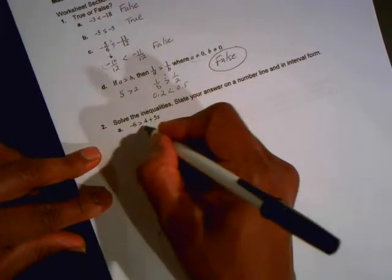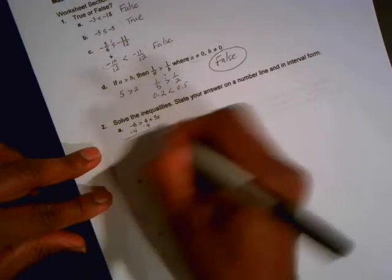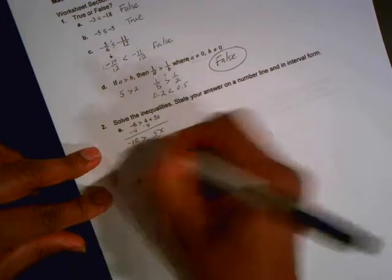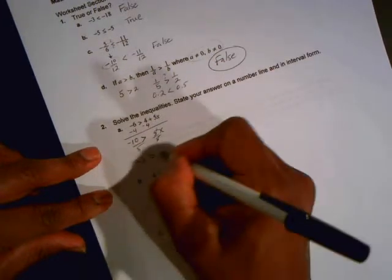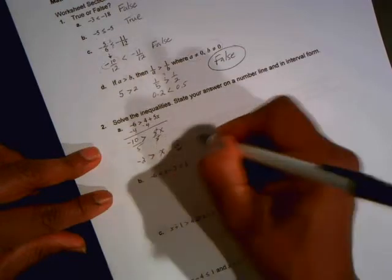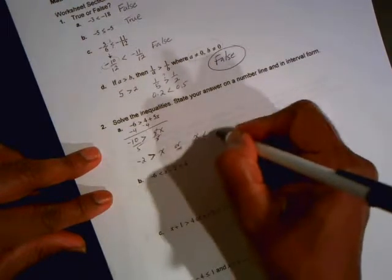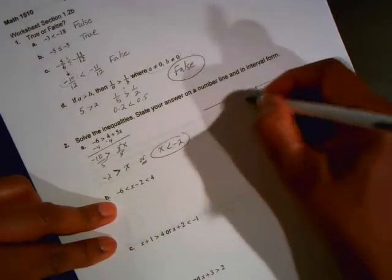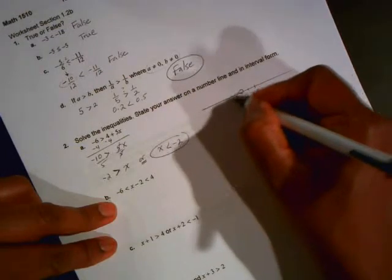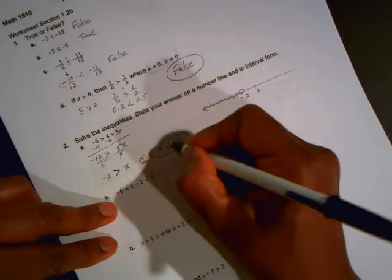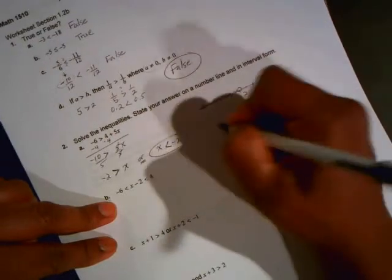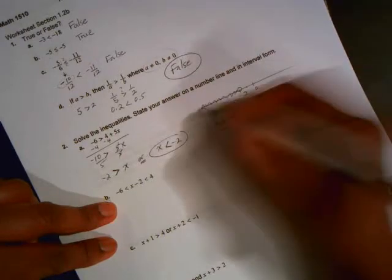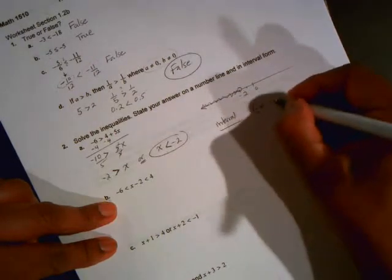So to get x by itself, we can subtract 4 from both sides. Negative 10 is greater than 5x. Divide by 5 now to get x alone. So negative 2 is greater than x. Or, written in proper form, x is less than negative 2. And to do this on a number line, simply put a 0 here. Negative 2 less than. Open hole. Shade to the left. Open hole because it's only less than, not less than or equal to. And in interval form, we always go from left to right. Parentheses. Over here, it's negative infinity. Negative 2. And parentheses again.